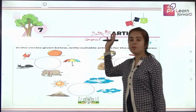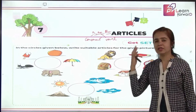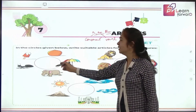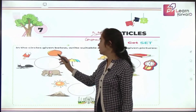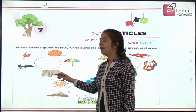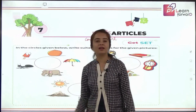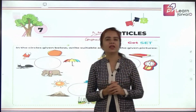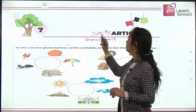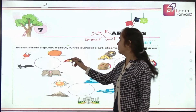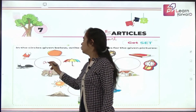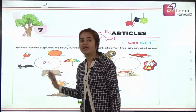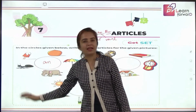Keeping these in mind, let's think about what we will use here. We have: ice cream, orange, umbrella, elephant, and aunt. All of these are singular and all of them start with a vowel sound. So what are you going to write in the circle? Very good — we will always say an ice cream, an orange, an umbrella, an elephant, and an aunt.